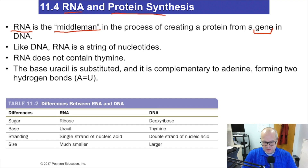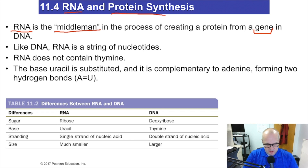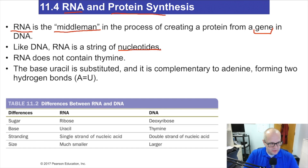A gene is simply a piece of DNA — usually a big piece — and it's encapsulated into a chromosome. A gene is a specific part of DNA that is going to code to make a protein. Now, like DNA, RNA is a string of nucleotides.